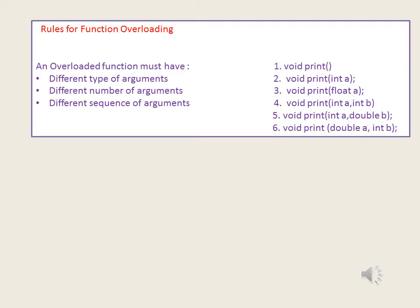Next are the rules for function overloading. There are certain rules that an overloaded function must follow. There are three different conditions: an overloaded function can have different types of arguments, different numbers of arguments, or a different sequence of arguments.